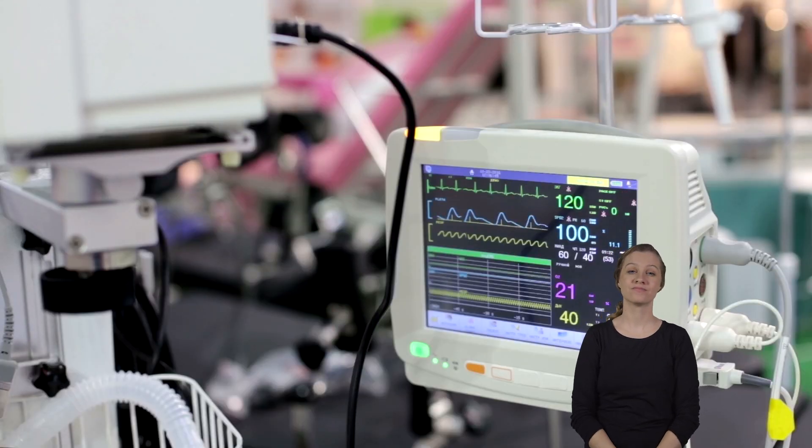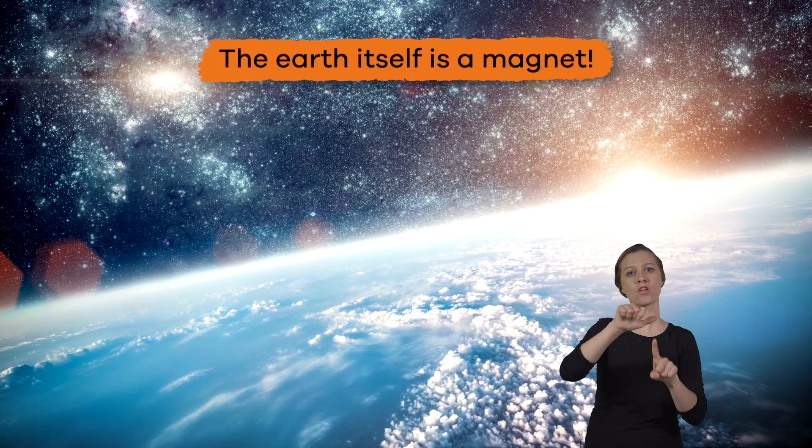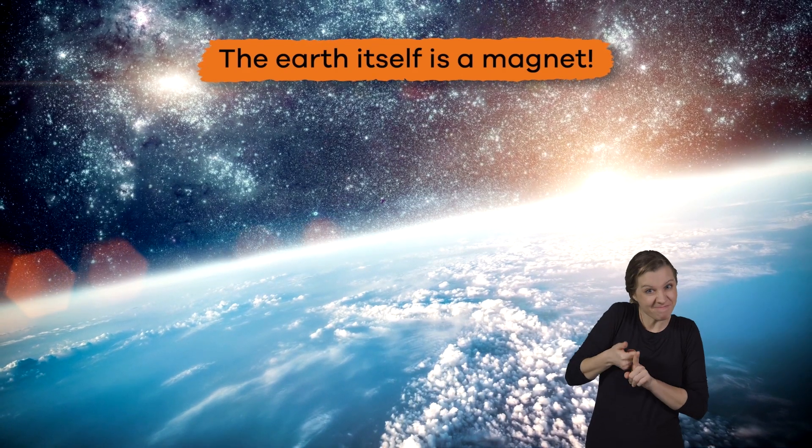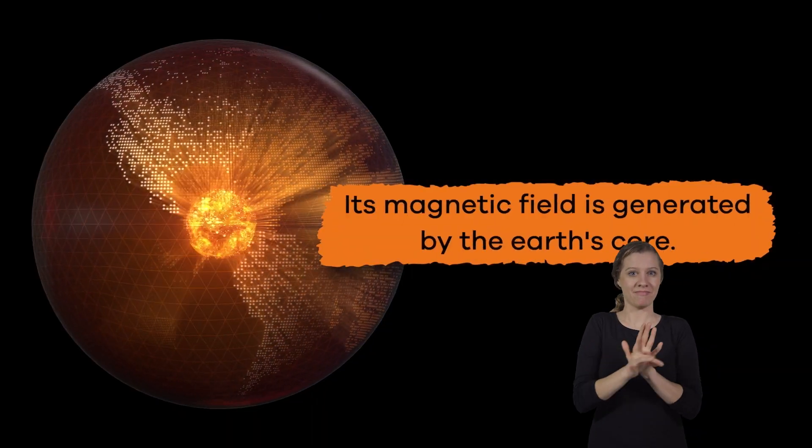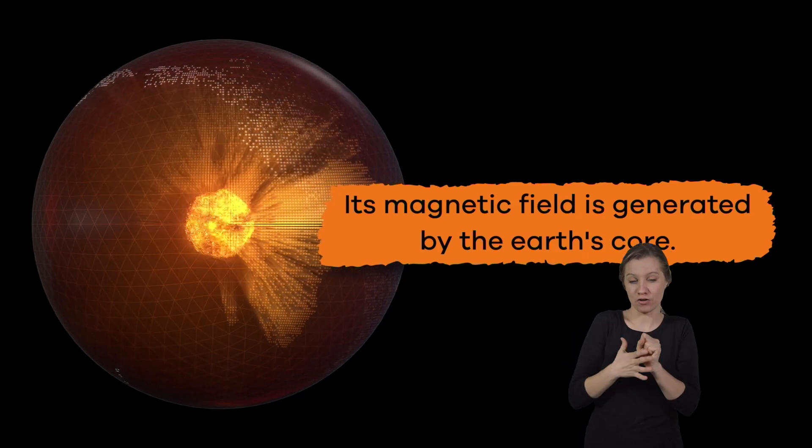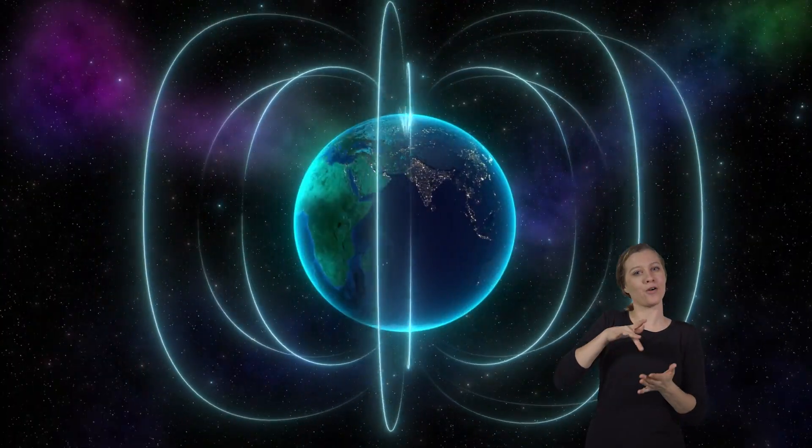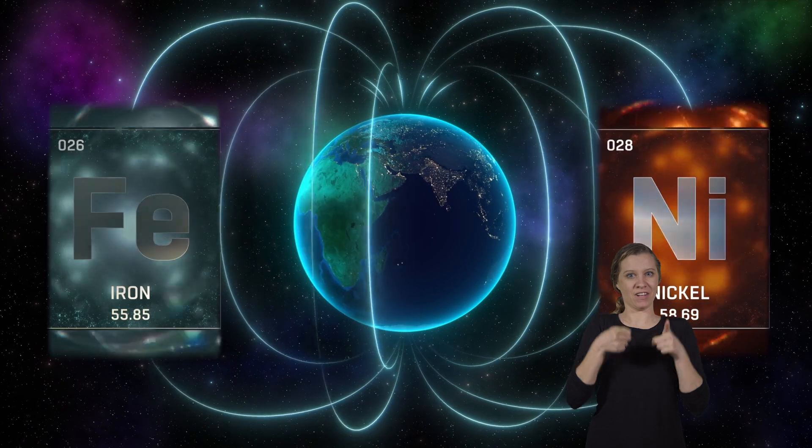In fact, the earth itself is a magnet of sorts, with its own magnetic field that is generated by the earth's core. This phenomenon is created by the combination of molten iron and nickel that exists in the earth's outer core.